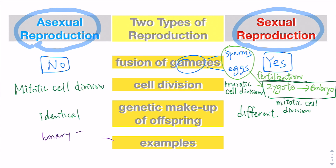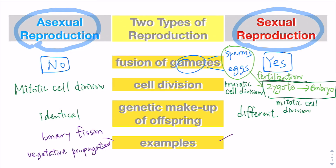Examples of asexual reproduction include binary fission and also vegetative propagation. The details of binary fission and vegetative propagation will be mentioned in other videos. Binary fission can take place in algae, bacteria, and other simple organisms, while vegetative propagation is mainly for plants. Examples of sexual reproduction involve many different organisms including humans and also flowering plants, covered in other videos.